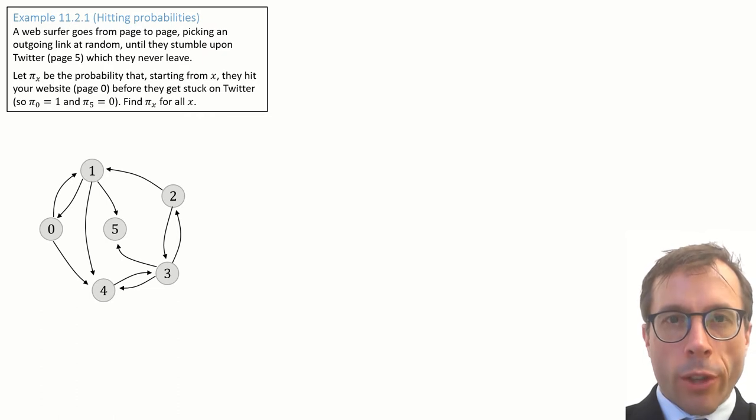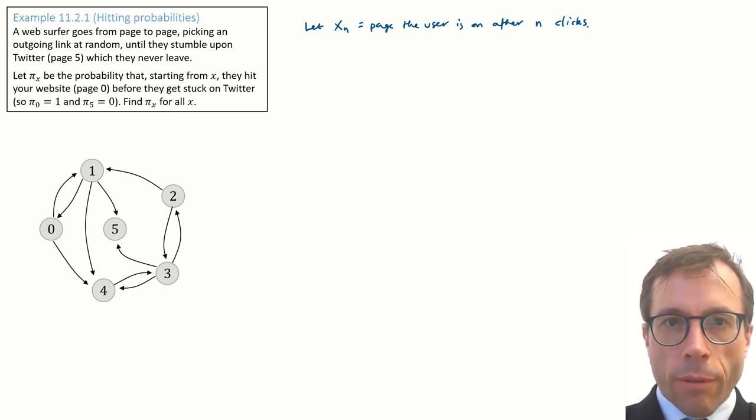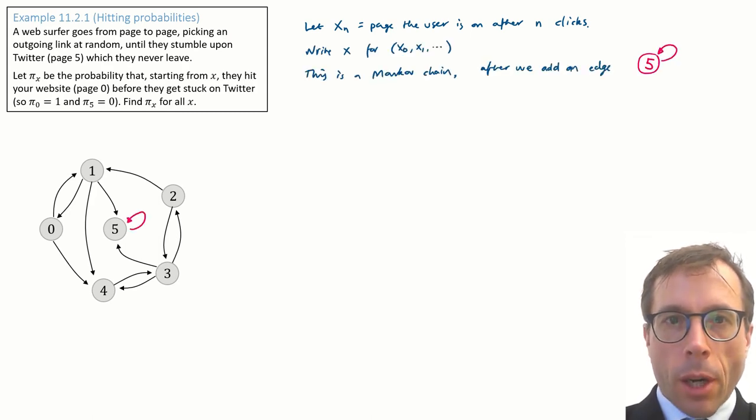Let's start by turning this into a question about Markov chains. Let xn be the page the user is on after n clicks. The problem says that from each page, they select an outgoing link at random. This means it's a Markov chain. Remember, the defining feature of a Markov chain is memorylessness: what you do next depends only on where you are now, not on the past.